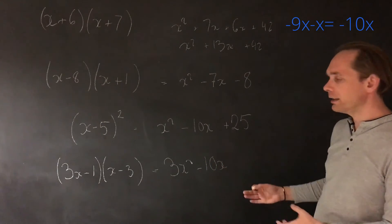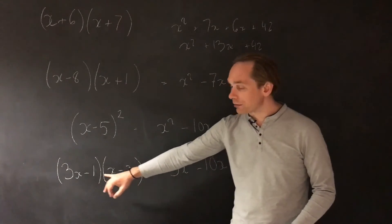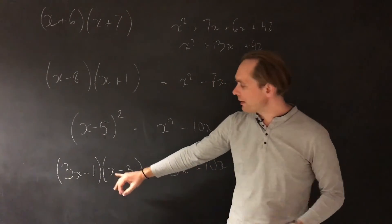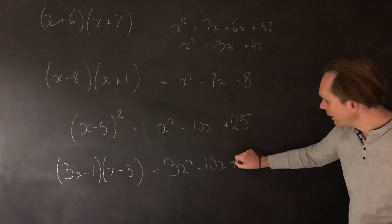And then finally, the last term. You're going to get the product of these numbers. Minus 1 times minus 3 is plus 3. So that's the last term.